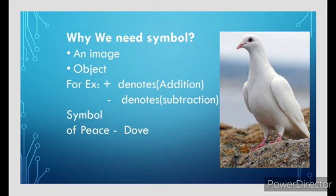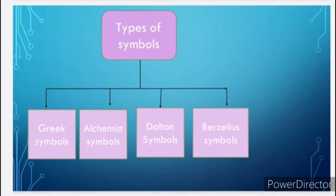And image means what? The symbol of peace: dove. The bird is dove. So we can easily understand - the picture of dove means we can easily understand it's the symbol of peace. These are all the reasons for needing symbols. Symbol of elements - a shortened form given as symbols. And the types of symbols: there are four types. First is Greek symbols, second is alchemist symbols, third is Dalton symbols, and fourth is Berselius symbols. These are all the types of symbols.